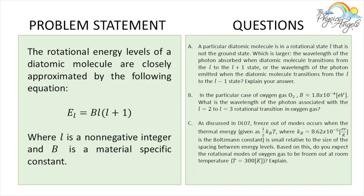A particular diatomic molecule is in a rotational state L that is not the ground state. Which is larger: the wavelength of the photon absorbed when the molecule transitions from L to L+1, or the wavelength of the photon emitted when it transitions from L to L−1? Be sure to explain your answer.